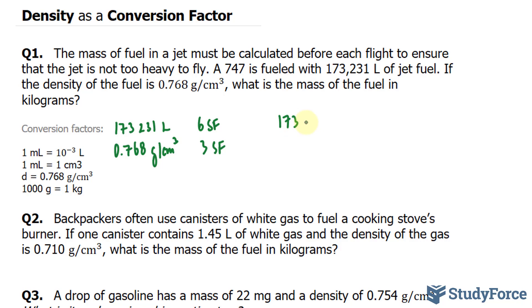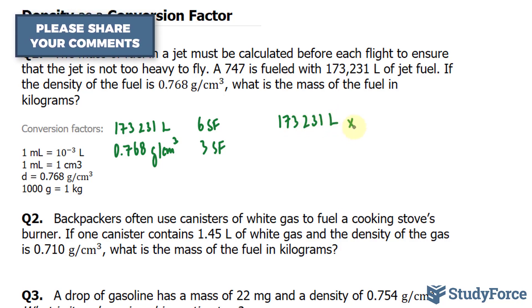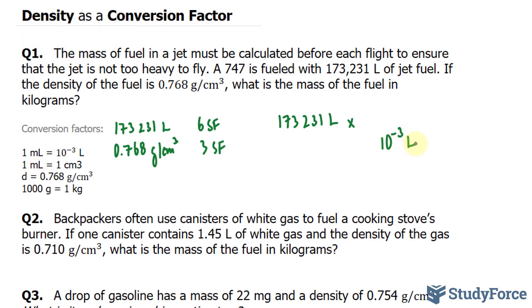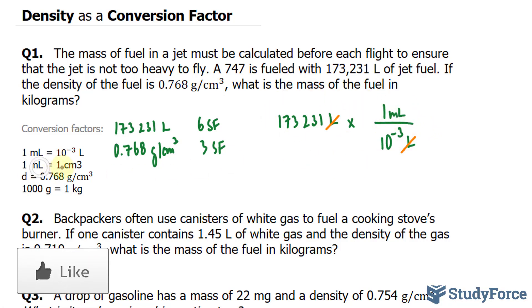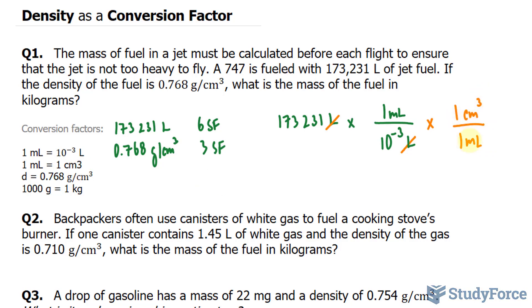So I'll take 173,231 liters and multiply that by this conversion ratio, where I have 10 to the power of negative 3 liters at the bottom and 1 milliliter at the top. The reason I oriented this conversion factor this way is because the liter units will cancel out, leaving us with milliliters. Our next conversion will multiply this product by 1 milliliter at the bottom and 1 centimeter cubed at the top. This will cancel out the milliliter unit, and now we're left with centimeters cubed.